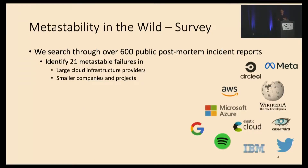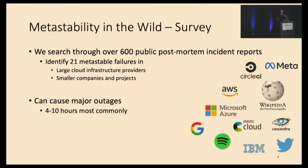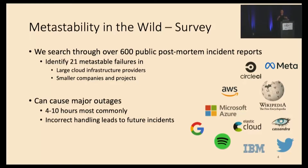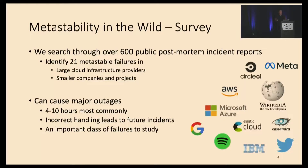Although 21 might not sound like a lot, they do exist everywhere and can cause major outages. From our survey, the outage period varies from 1.5 hours to over three days, with four to ten hours being most common. Interestingly, there are instances where incorrect handling further led to future events — for example, engineers at Spotify tried to find the root cause of their retry storms by adding more logging to the error path, which increased the average cost of each request, generated more retries, and exacerbated the metastable failure sustaining effects.